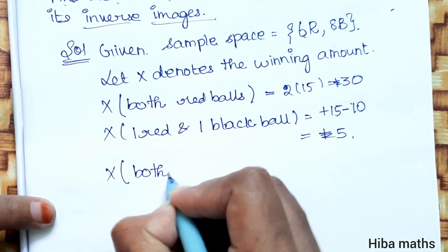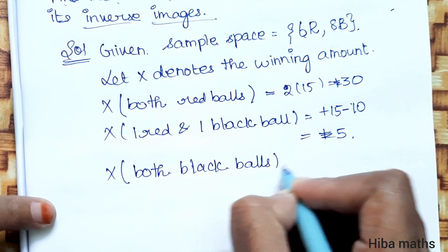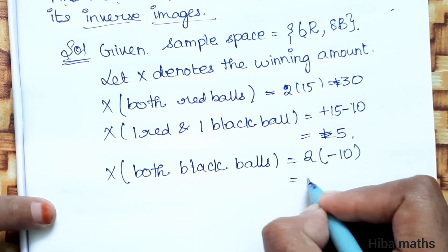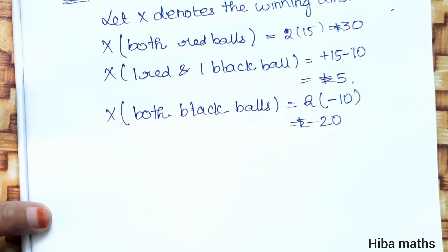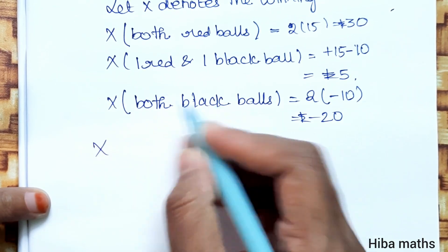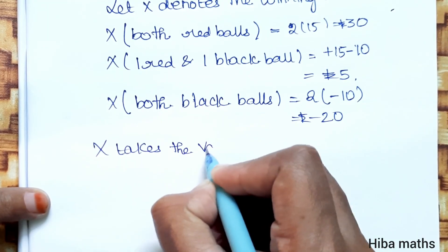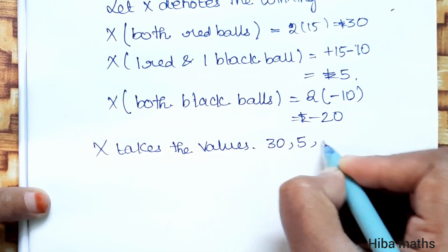Next, both black balls. If we select 2 black balls, we lose 10 rupees each, so we lose 20 rupees. So x = −20 rupees. Therefore x takes the values 30, 5, and −20.